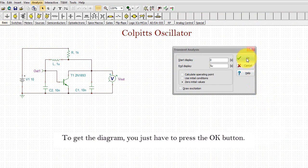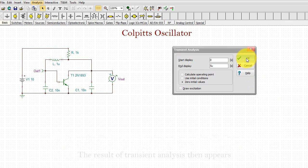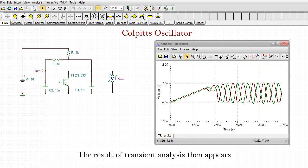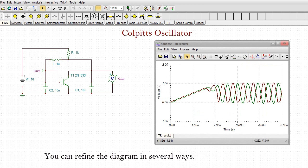To get the diagram you just have to press the OK button. The result of the transient analysis then appears. You can refine the diagram in several ways. Here are a few.